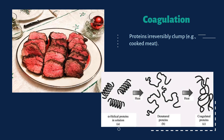Next is coagulation — when heat causes proteins to unfold and form solid structures, like when egg whites go from clear to firm. Proteins irreversibly clump together; for example, cooked meat. The alpha-helical proteins in solution turn into denatured proteins when heated, and when heated again at high temperatures, they turn into coagulated proteins, which cannot be transformed back.